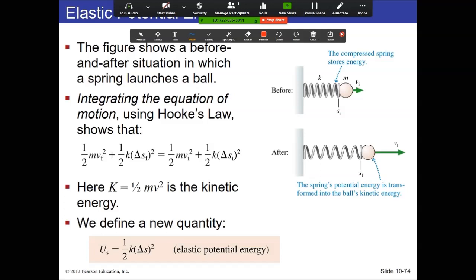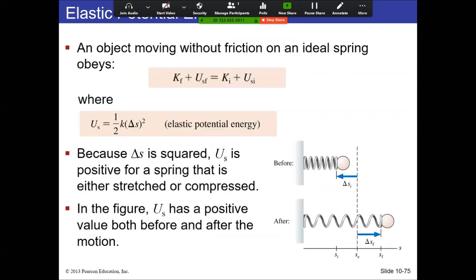The basic energy equation now includes spring potential energy U_S. You can mix all three together — kinetic, gravitational, and spring potential energy — and you'd just have additional gravity terms on each side. The approach is the same: characterize the before and after pictures.